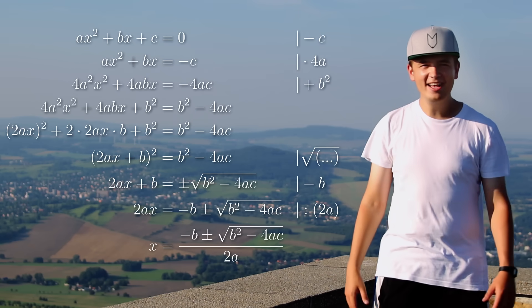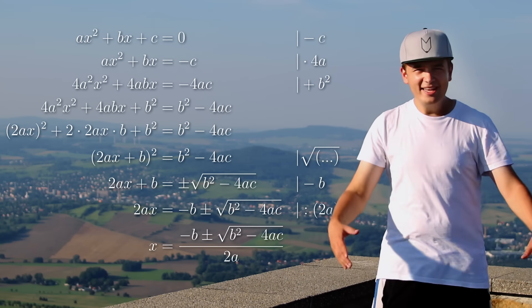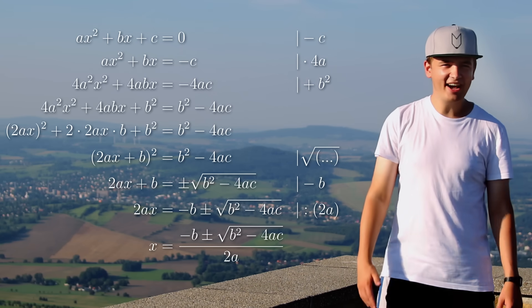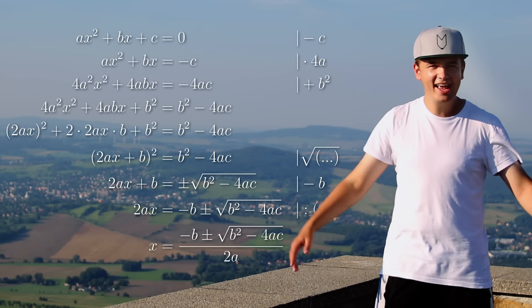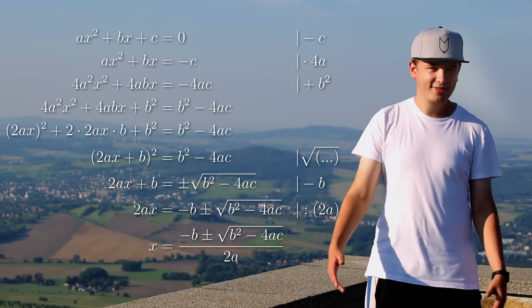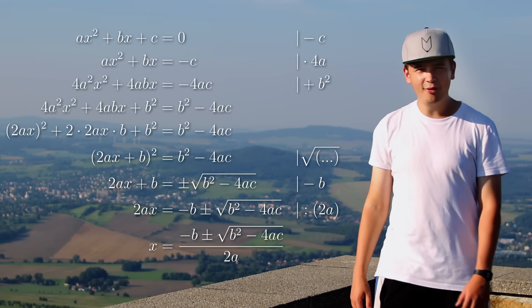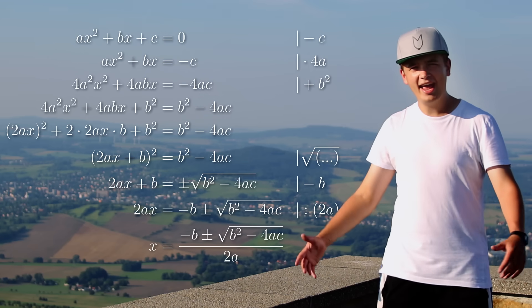Okay, and it's negative b plus or minus the square root of b squared minus 4ac over 2a. Negative b plus or minus the square root of b squared minus 4ac over 2a.